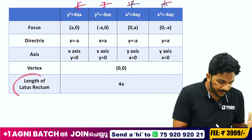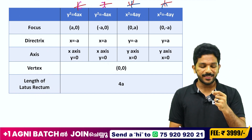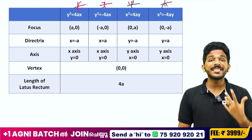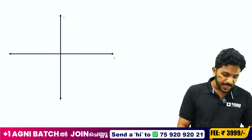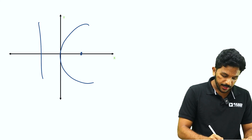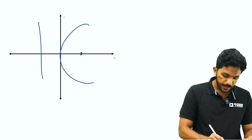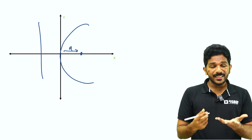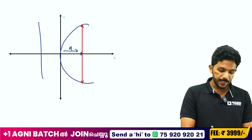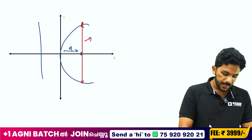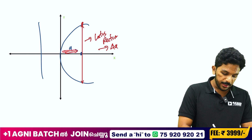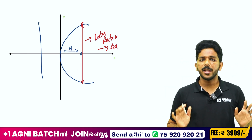The length of the Latus Rectum is 4a. The latus rectum is a chord perpendicular to the axis of symmetry passing through the focus. The focus is at point (a, 0). This perpendicular line through the focus is the latus rectum, and its length equals 4a.